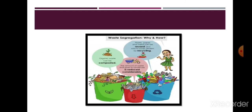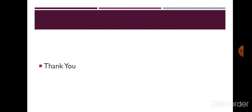To summarize: waste can be divided into biodegradable and non-biodegradable categories and needs to be managed properly. Biodegradable waste should go into pits and be converted into compost. Non-biodegradable waste should be used less, and it should be reused and recycled. That's all for the day, children. Thank you so much.